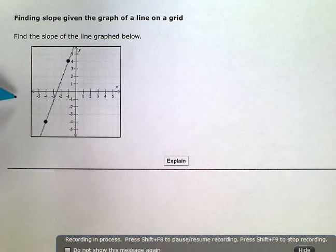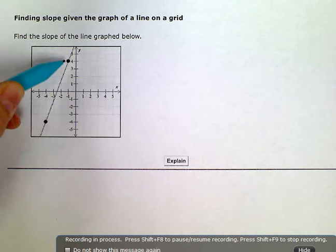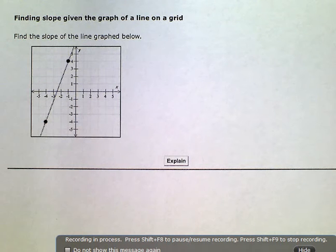So I have a graph here with a line and two marked points, and I need to find the slope of this line. Now I don't necessarily have to use these two points to find slope—I could use any two points on this line—but since they're marked, this is what I'm going to use. And if you remember,